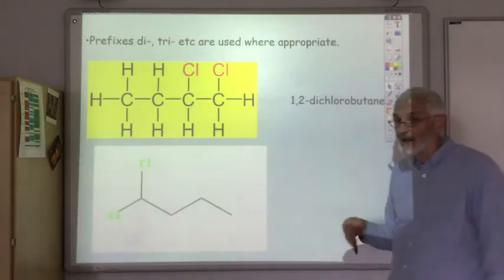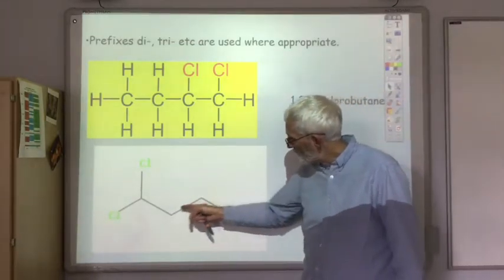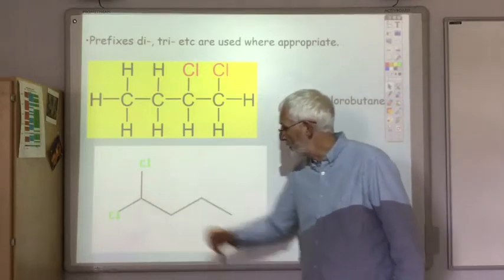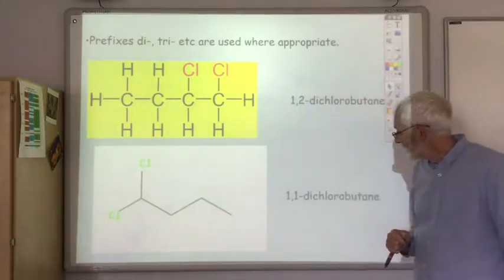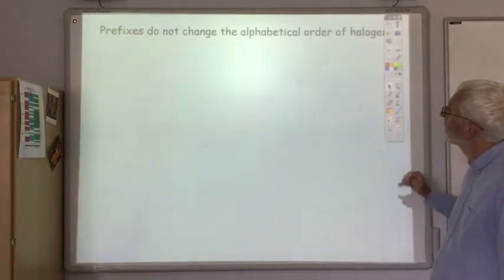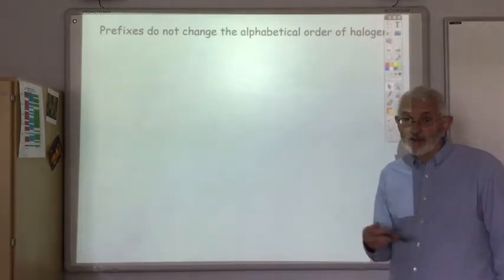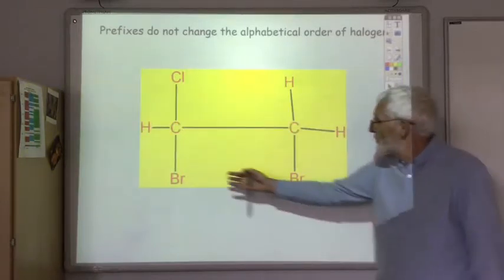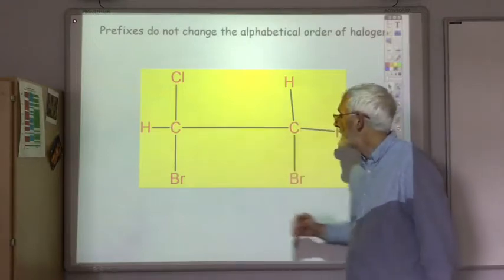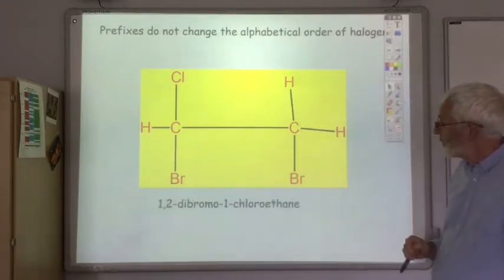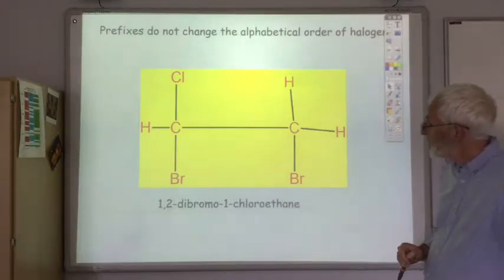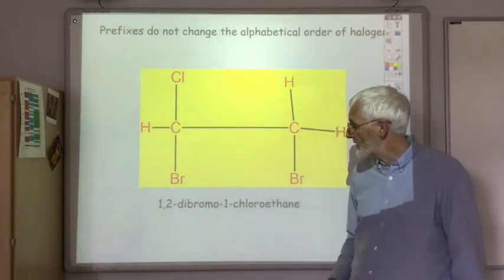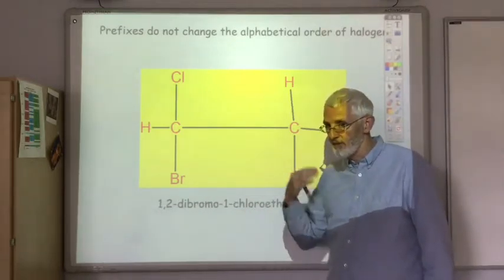This one is done in skeletal formula — it's butane, numbered 1-2-3-4, or going from the other end 1-2-3-4 — two chlorines both on the first carbon, so it's 1,1-dichlorobutane. Note that prefixes do not change the alphabetical order. For example, here we've got two bromines so it's dibromo and one chlorine, so the name is 1,2-dibromo-1-chloroethane. You ignore the fact that the D in dibromo would come after chloro alphabetically — it's always bromines, then chlorines, fluorines, iodines.